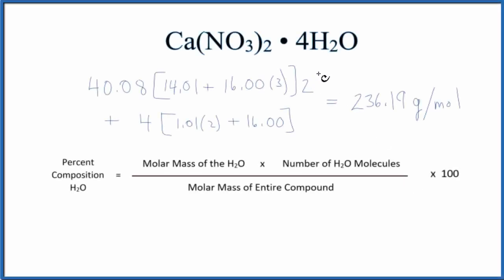In this video we'll find the percent composition by mass of the water in this Ca(NO3)2·4H2O. This is calcium nitrate tetrahydrate.